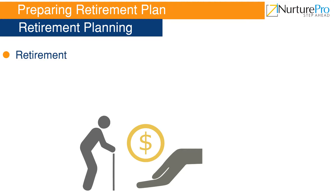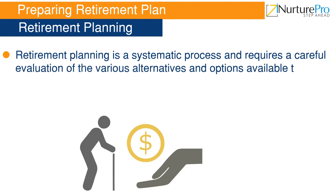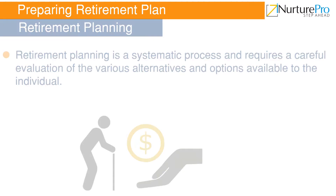Because no work means no money. To enjoy retirement life, one has to plan and save for it. Therefore, retirement planning is a systematic process and requires a careful evaluation of the various alternatives and options available to an individual. To plan for retirement, one has to follow certain strategies. Let's look at each one of them in detail.